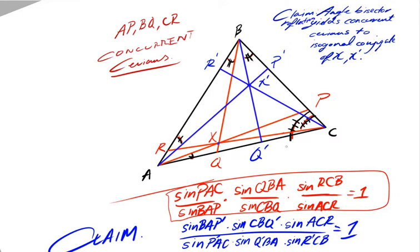Because we're isogonally reflecting, or reflecting across the angle bisector, we have some fairly obvious angle equalities. These two angles, BAP' and PAC, these two angles, that should be RCB and ACR', sorry, that should be ACR prime.